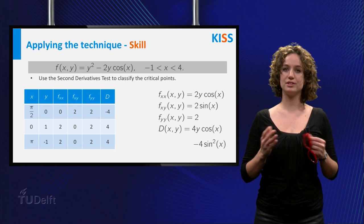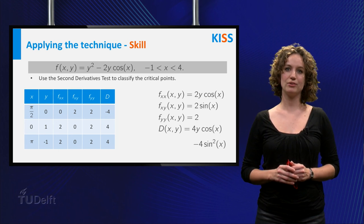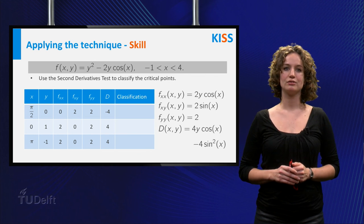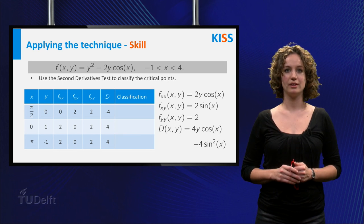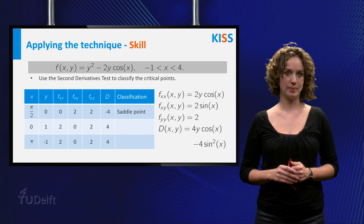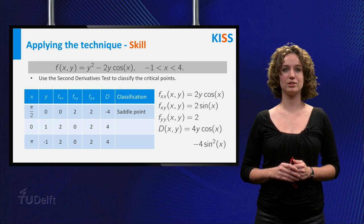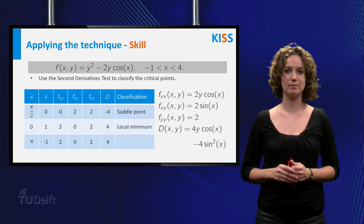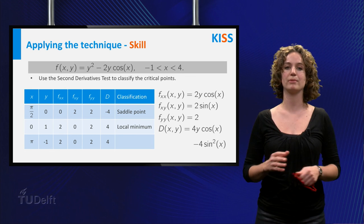Now you can use the second derivatives test to classify the critical points — let's add another column to the table. For (pi/2, 0), D is less than zero, therefore this is a saddle point. For (0, 1), the determinant is positive and the second partial derivative of f with respect to x is also positive, so f has a local minimum. The same is true for the last critical point (pi, -1).